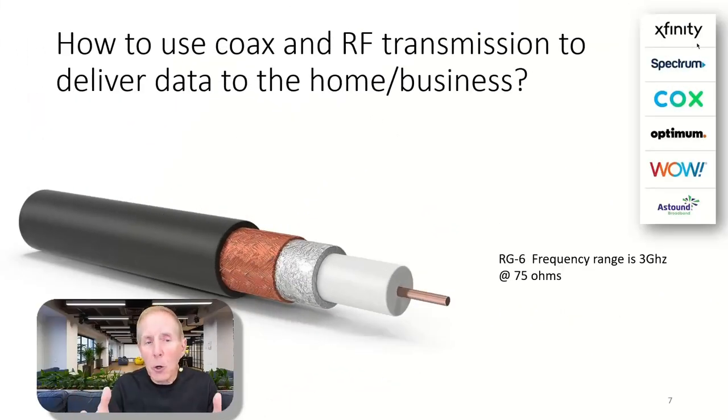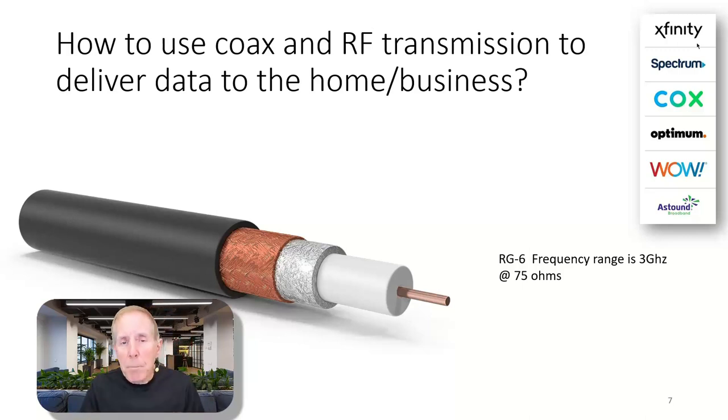Cable companies have been using coax cable, shown in this picture, to deliver RF video for years. But from an engineering point of view, this is simply a transmission line. How could they take this same mechanism, add the necessary technology components, so they could send data down this coax cable?